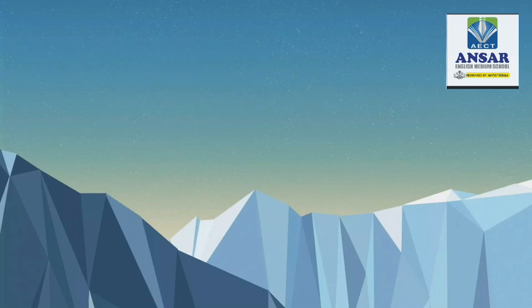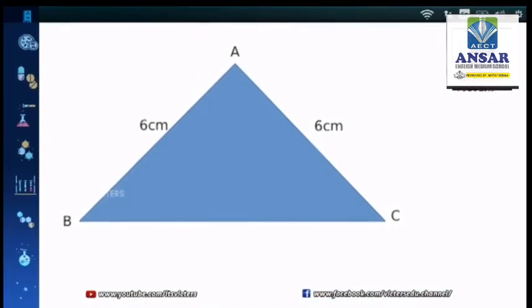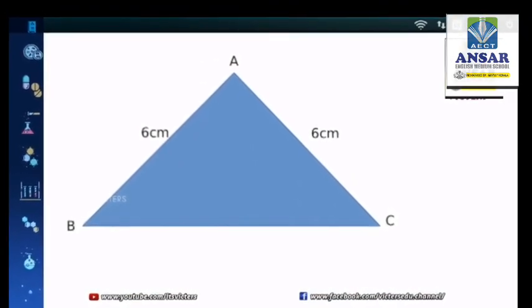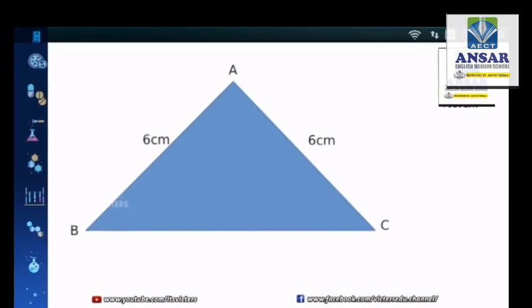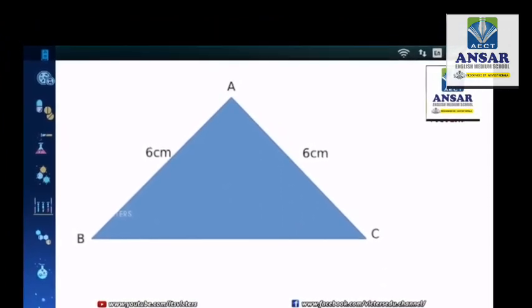Here it is. If two sides of a triangle are equal, then it is called an isosceles triangle. In this example, the two sides are six centimeters.